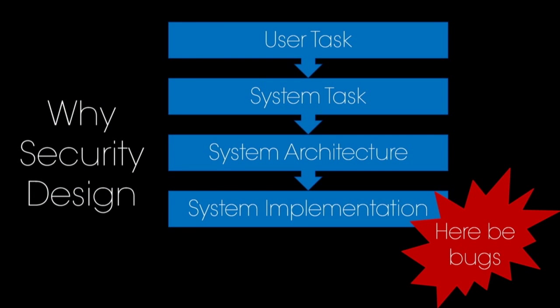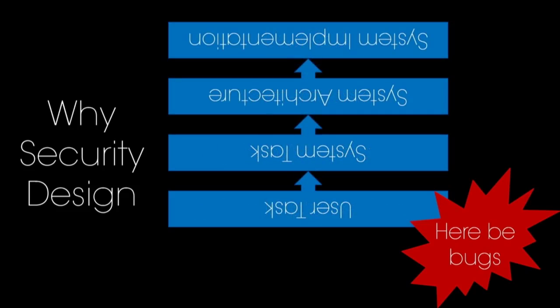Design is what we're here to actually talk about. This is our traditional understanding of what the stack of a system looks like. You've got some task the user is trying to accomplish that translates into a task in the system, that translates through some system architecture, and then it gets implemented, and then there are bugs. We got that backwards. The bugs happen in the user task — the bugs impact someone who's trying to do a thing. And if you don't design from the user task forward for security, that's where you get the problems.